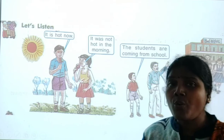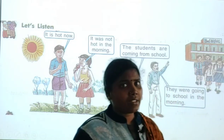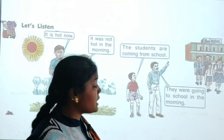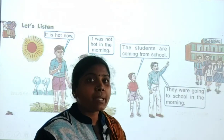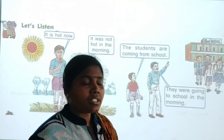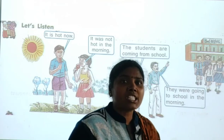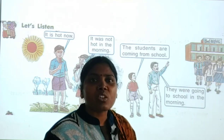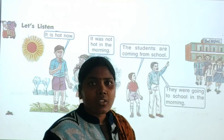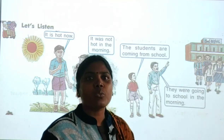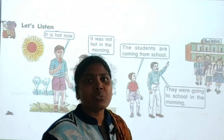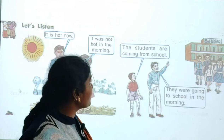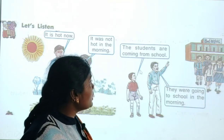Now let us listen to how two people can communicate with each other. A boy says 'It is hot now' — he is talking about the present time. A girl says 'It was not hot in the morning' — she is talking about earlier, when they came out and the climate was normal. But now in the afternoon it is hot.